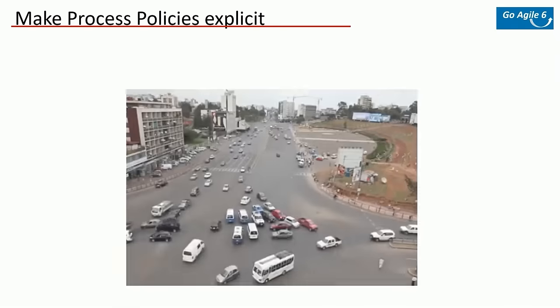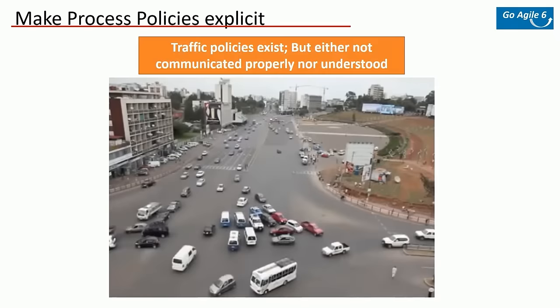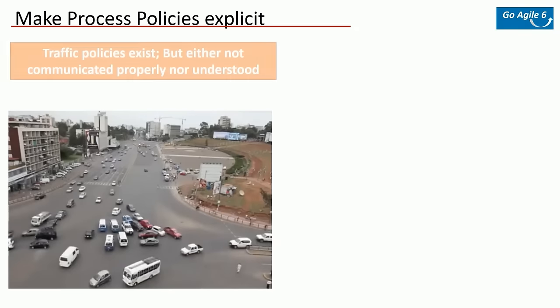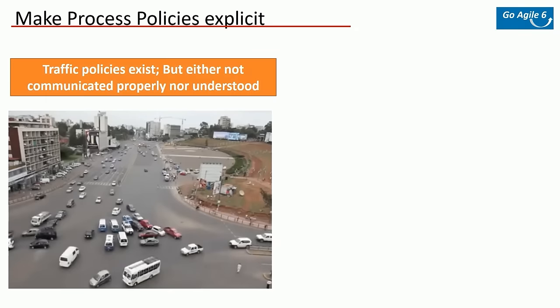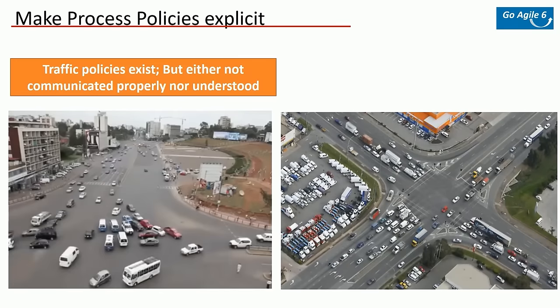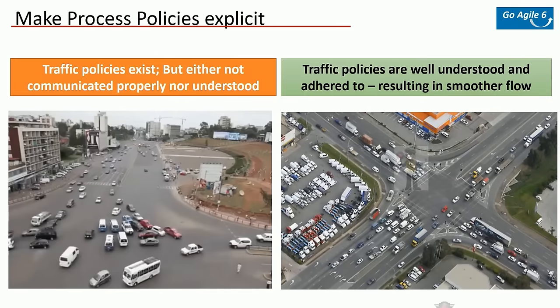Next is making process policies explicit. Policies may exist, but unless you explicitly communicate them, it's not of much use. For example, traffic policies exist but if they're not communicated properly or understood, it leads to chaos and accidents. When the same policies are explicitly communicated — through traffic cops or traffic lights — the flow gets smoother.